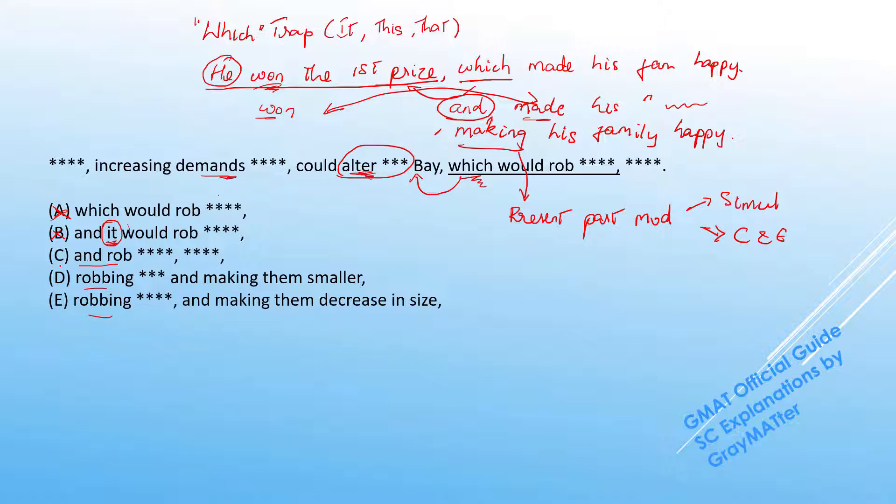In the same way, we know that robbing and making them smaller is a direct effect of the increasing demands altering the saline content. So C cannot work because the and would separate them as two different actions.